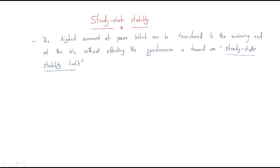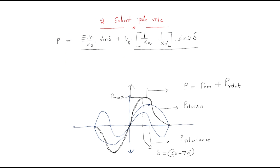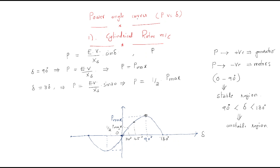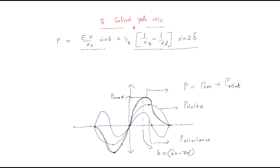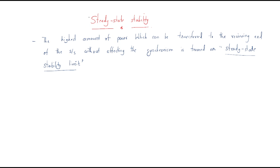In this session we will continue the previous topic on power angle curves in cylindrical rotor as well as salient pole rotor. The next topic is steady state stability — a very important concept. The definition is: the highest amount of power which can be transferred from the receiving end of the system without affecting the synchronism is termed as the steady state stability limit.